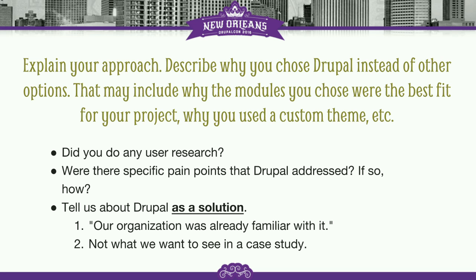Next, explain your approach. Describe why you chose Drupal instead of other options. That may include why the modules you chose were the best fit for your project, why you used a custom theme, and so on. Did you do any user research? Were there specific pain points that Drupal itself addressed? For example, maybe Drupal out of the box had this one thing that you really needed, and you knew it would save you a lot of time to use it. Tell us about Drupal as a solution. I so often see people say 'we went with Drupal because we already knew how to use it' — that's not good enough. We want to know why Drupal was a good fit for this site. You might have to be a little bit creative with your answer, but tell us about Drupal as a solution.